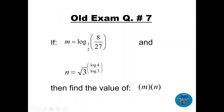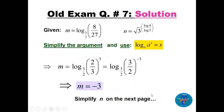Question number seven: m = log base (3/2) of (8/27), find m. We note 8/27 = (2/3)^3. The argument has 2/3, but the base is 3/2, so we rewrite 2/3 as (3/2)^(−1), giving (3/2)^(−3). Using log base a of a^x = x, m = −3.